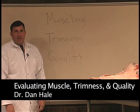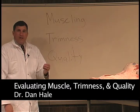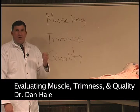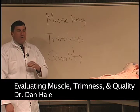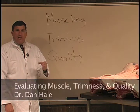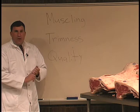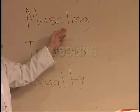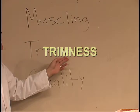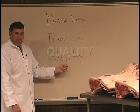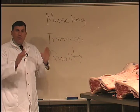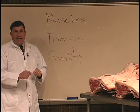When you begin meat judging, you need to understand the three primary concepts to look at when you're evaluating any class. Those three things are, first of all, muscling, trimness, and then quality. Those are the three primary components that you will evaluate in any class.